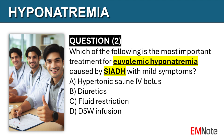Question number two: Which of the following is the most important treatment for mildly symptomatic euvolemic hyponatremia caused by SIADH? The correct answer is C. The most important treatment for mildly symptomatic euvolemic hyponatremia caused by SIADH is fluid restriction.